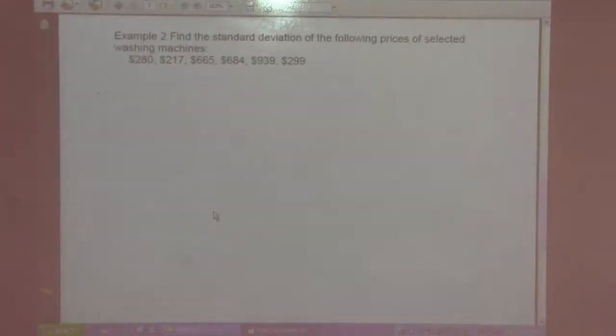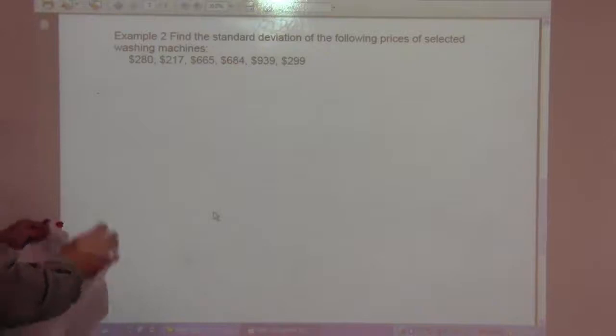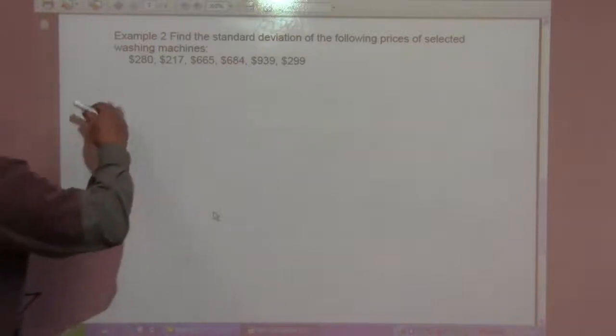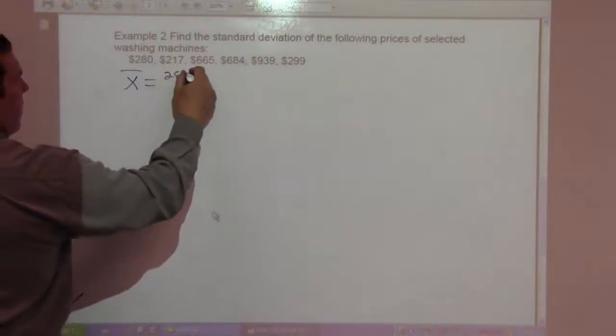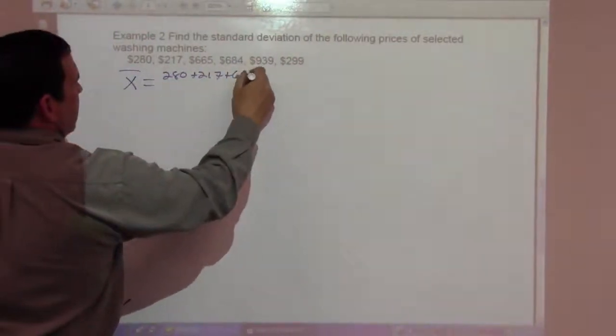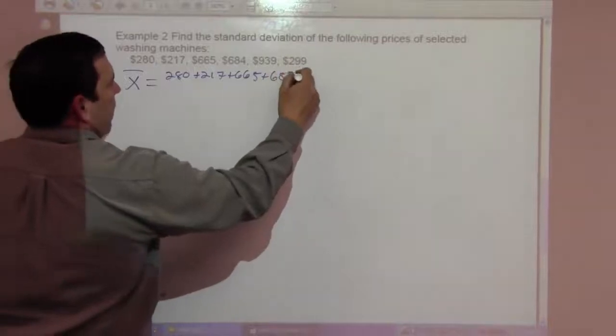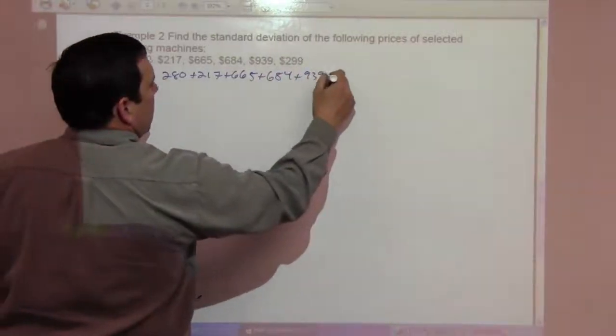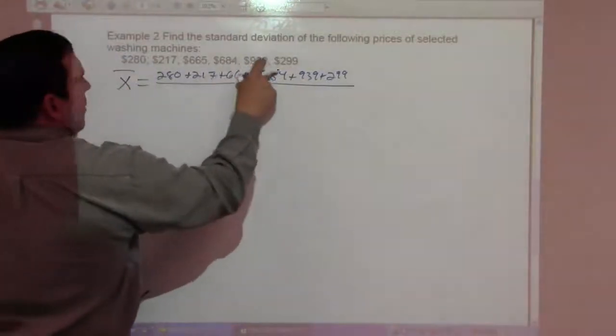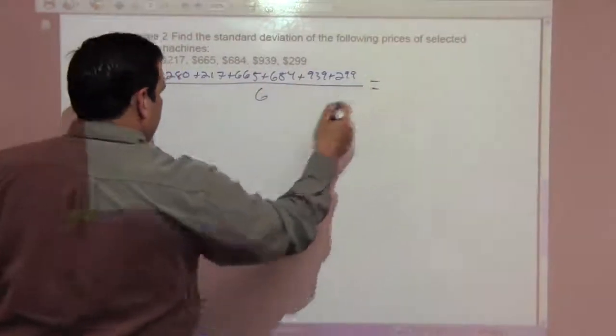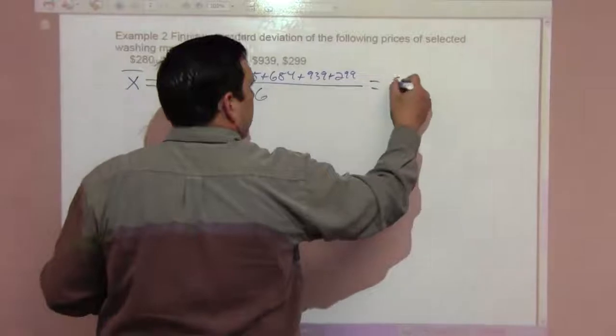So here's our set of data. First of all, our x̄ is going to be 280 plus 217 plus 665 plus 684 plus 939 plus 299 divided by 6. And that's going to give us 514.